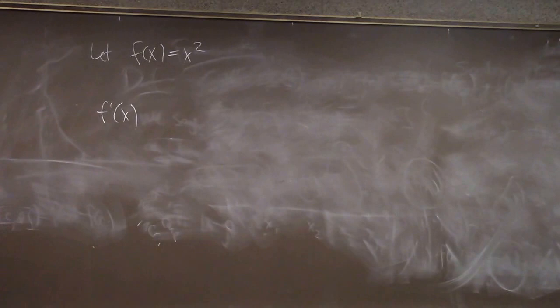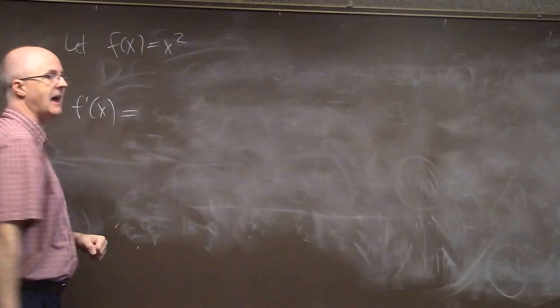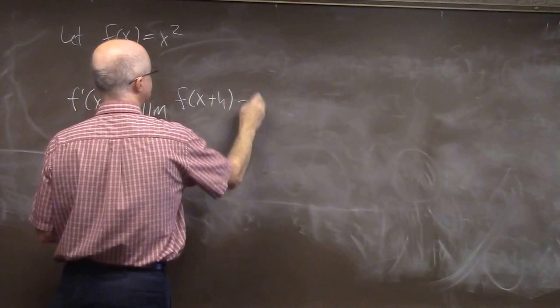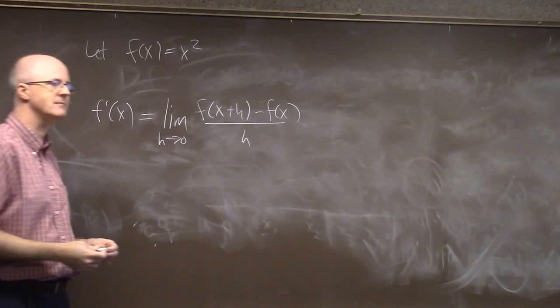Let's find f prime of x. Don't just say the answer is 2x. Not allowed yet. In Calc 1, here's how we teach people to do it. Take the limit as h goes to 0 of f of x plus h minus f of x divided by h.